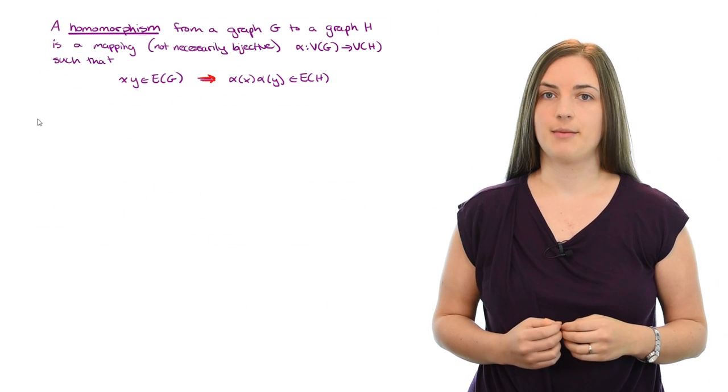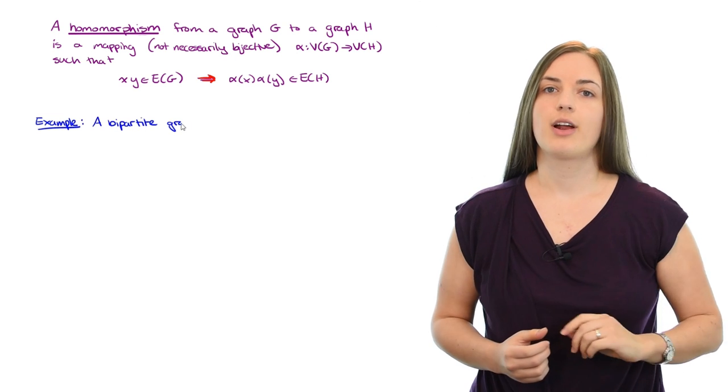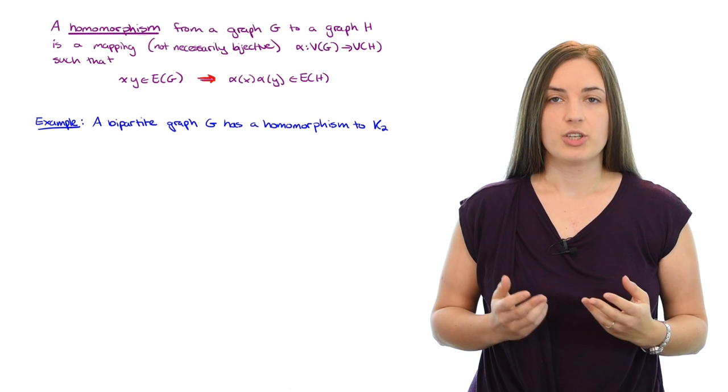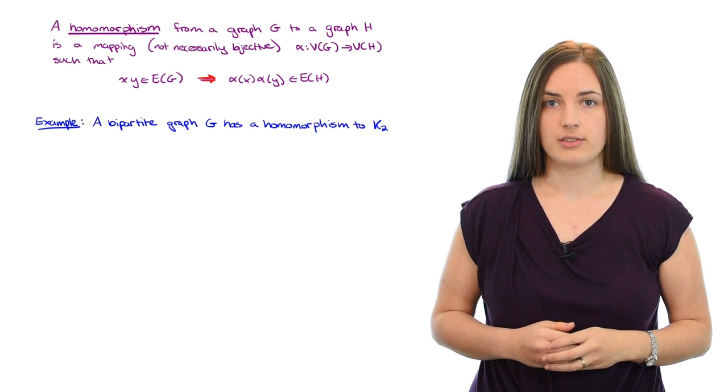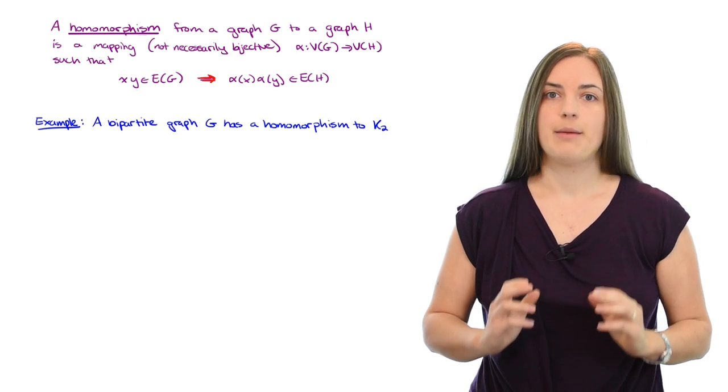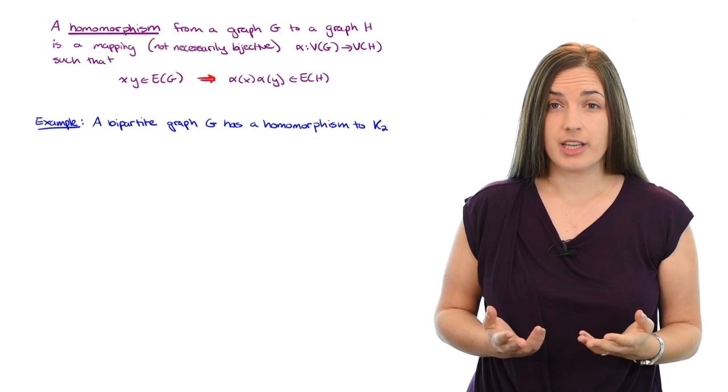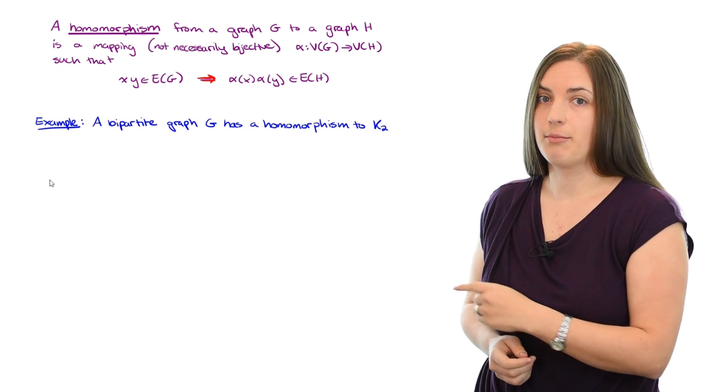In my first example, I want to show you that a bipartite graph G has a homomorphism to K2, which is the complete graph on two vertices. And this will work for any bipartite graph G. But just for the purposes of a picture to keep in mind, I'll draw an example graph.